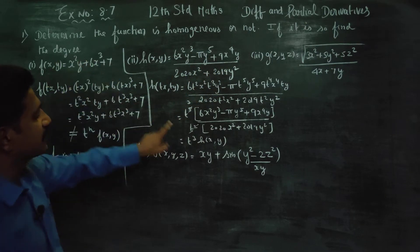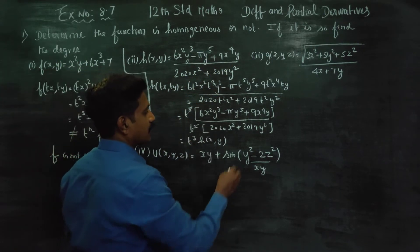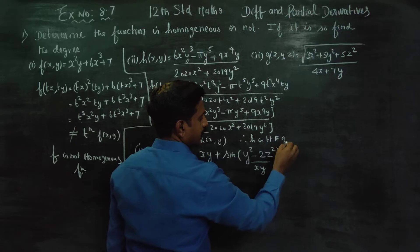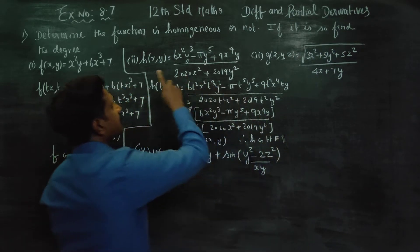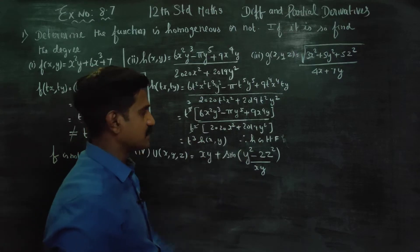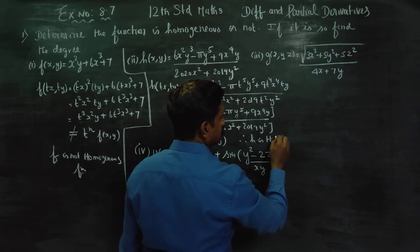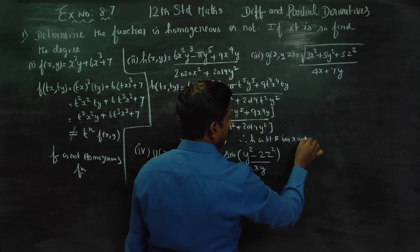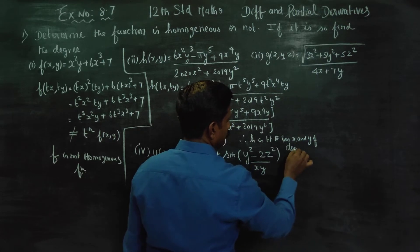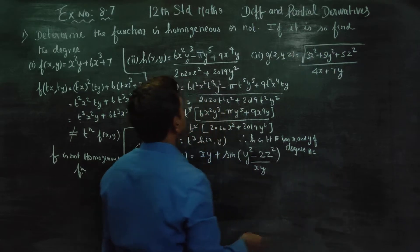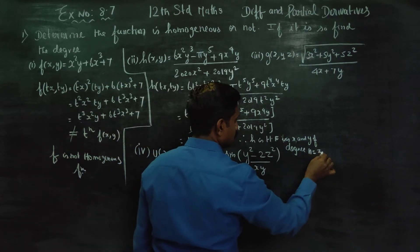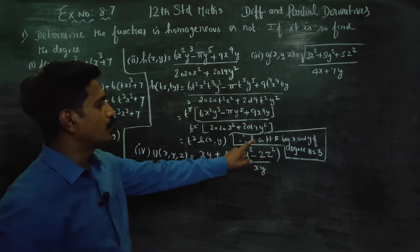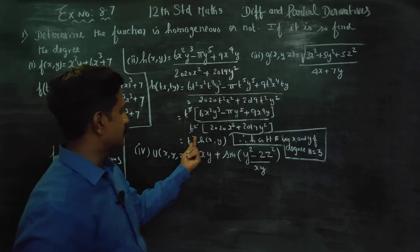If it is so, find the degree. The degree is 3. Therefore, H is a homogeneous function of x and y. H is a homogeneous function in x and y of degree n equal to 3.